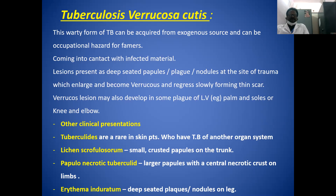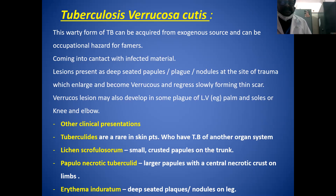Tuberculids are rare skin presentations in patients who have TB of another organ system. These include: lichen scrofulosorum, presenting as small crusted papules on the trunk; papulonecrotic tuberculid, with large papules with a central necrotic crust and scarring; and erythema induratum, which presents as deep-seated plaques and nodules on the legs.